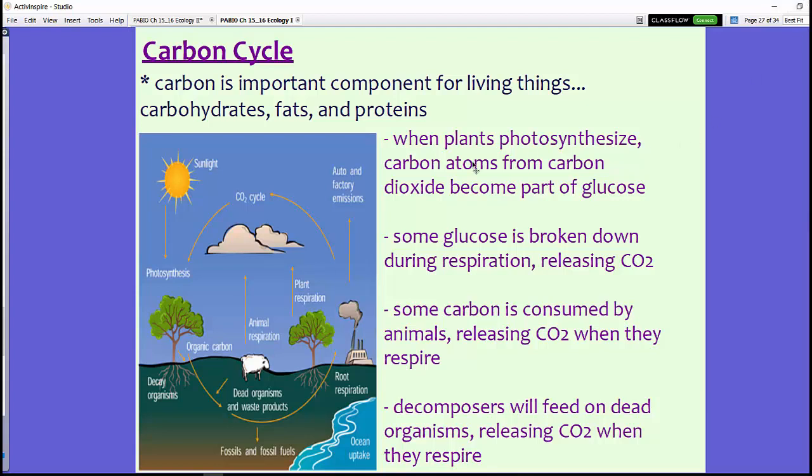Let's start with plants because plants actually use carbon dioxide as part of their photosynthesizing process. When plants photosynthesize, carbon atoms from the carbon dioxide become part of glucose. So that carbon is now part of that sugar that the plant has created. Some of this glucose is broken down during cellular respiration, and we have carbon dioxide being released.